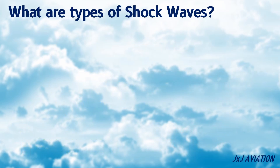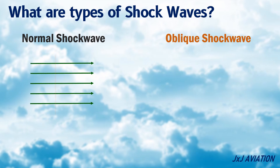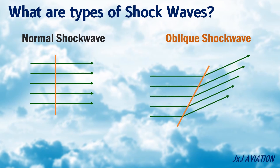What are the types of shockwaves? There are two major types of shockwaves: normal shockwaves and oblique shockwaves. A normal shockwave is formed perpendicular to the airflow, while an oblique shockwave is formed at an angle to the airflow.